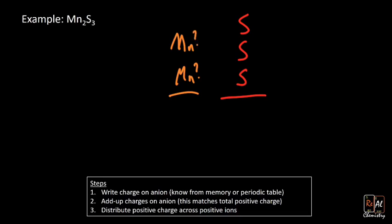Sulfur, I can get from the periodic table. I know it's minus two, minus two, minus two. When I add up the charges on the anions, I'm going to get a minus six. That matches the total positive charge on the left. It gives me a plus six. Now I distribute.